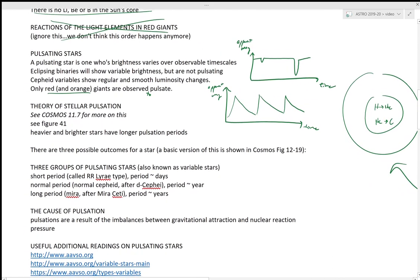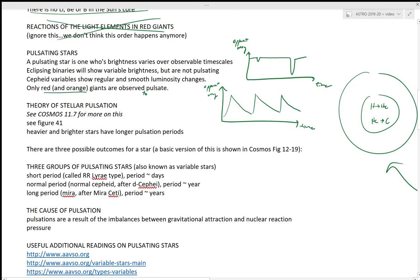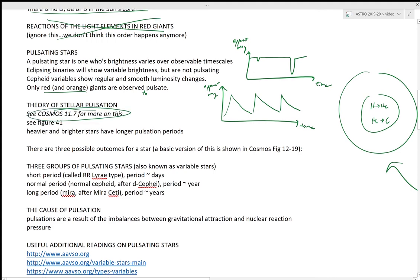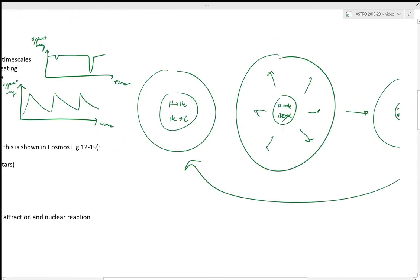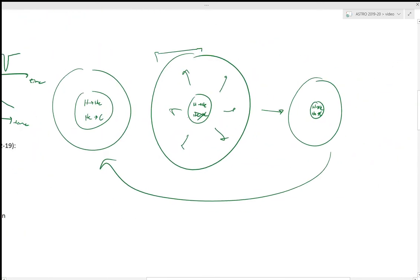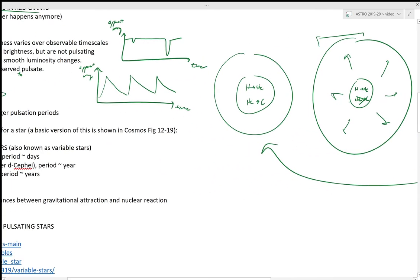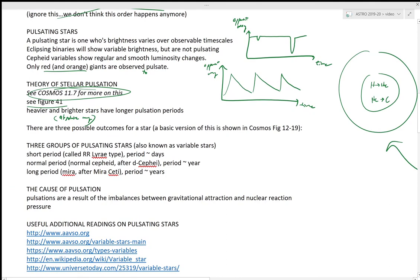I want you to review Cosmos section 11.7 for this. Figure 41 is a really good example of this. Heavier and brighter stars will have, in the absolute magnitude sense, longer pulsation periods because they're just larger stars. And so the distance that the star actually has to puff out and expand and then shrink back down is bigger, so it just takes longer. Smaller stars can pulsate, can puff out and shrink down a lot faster.